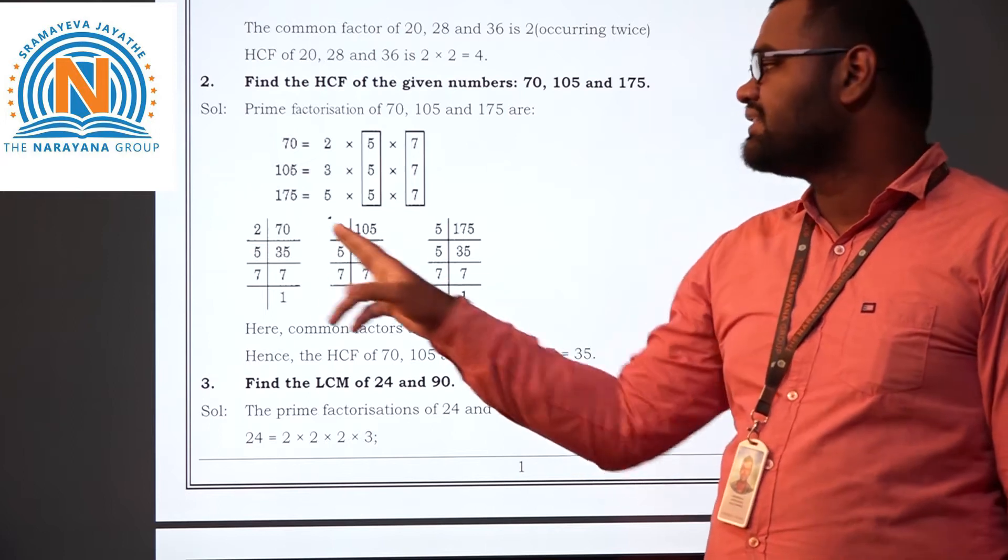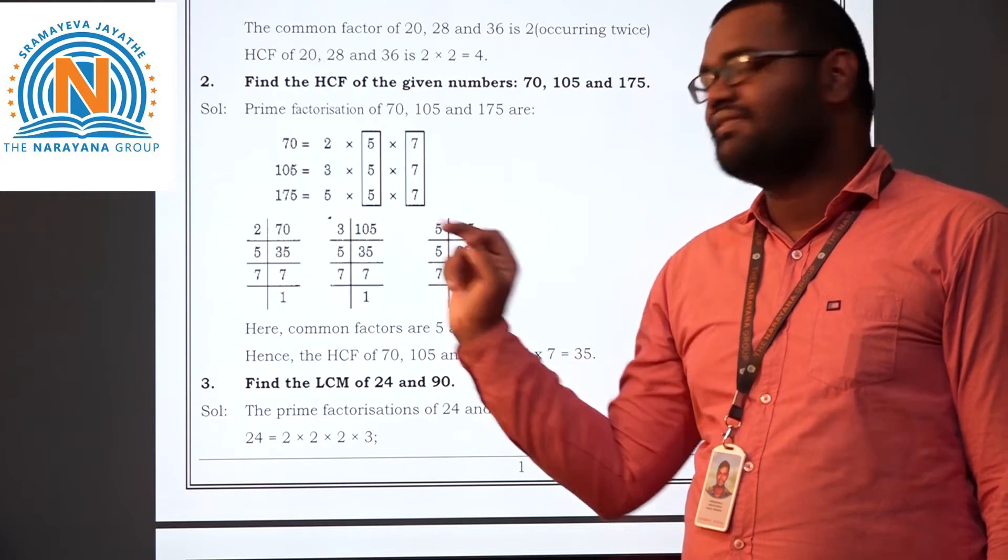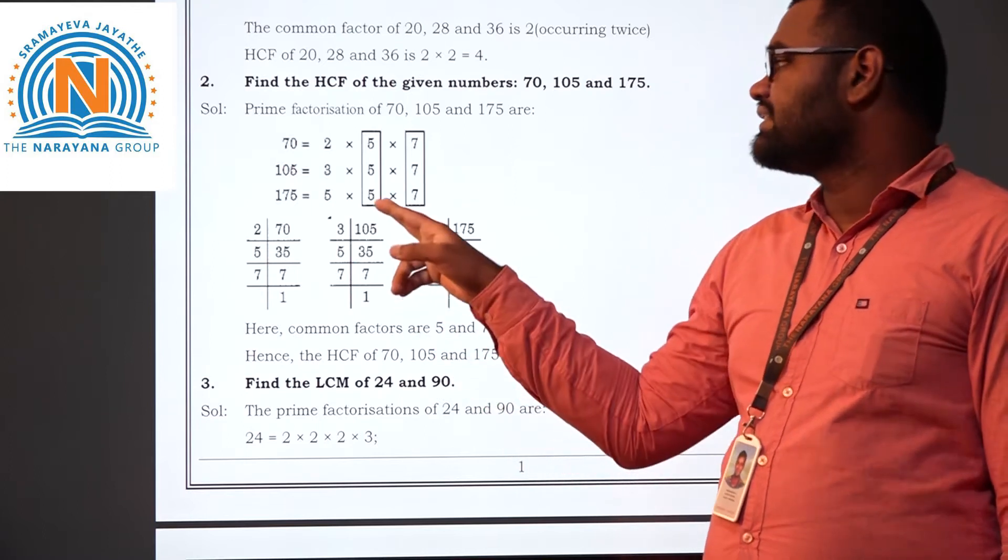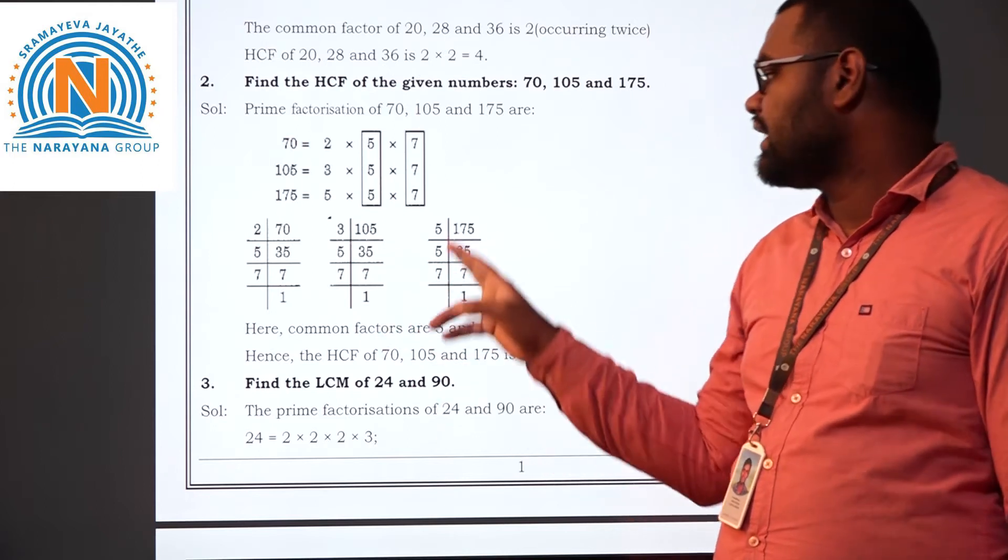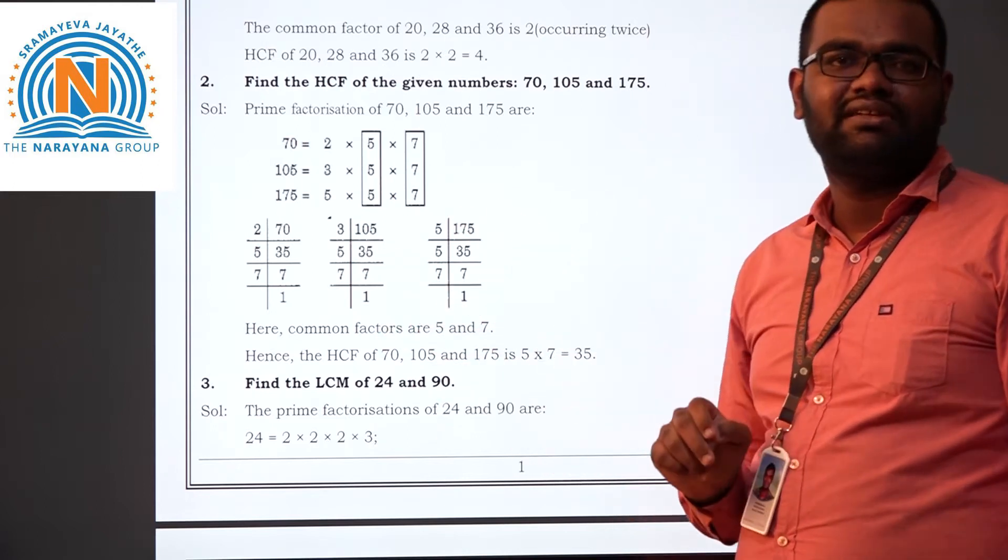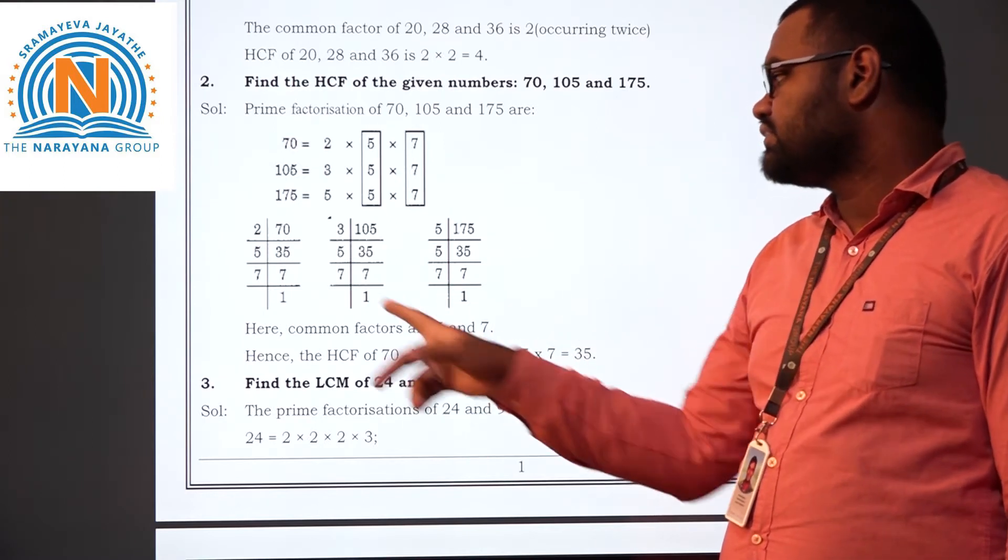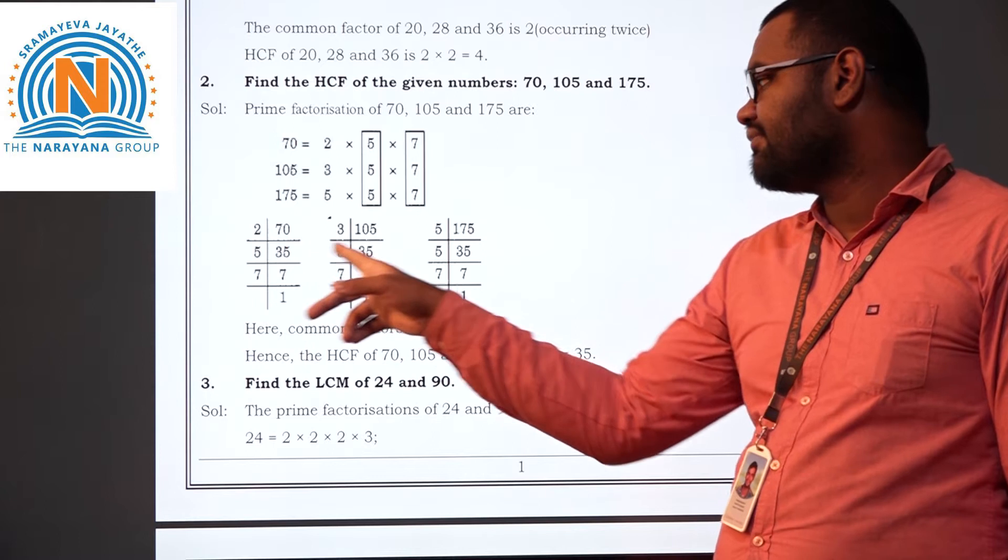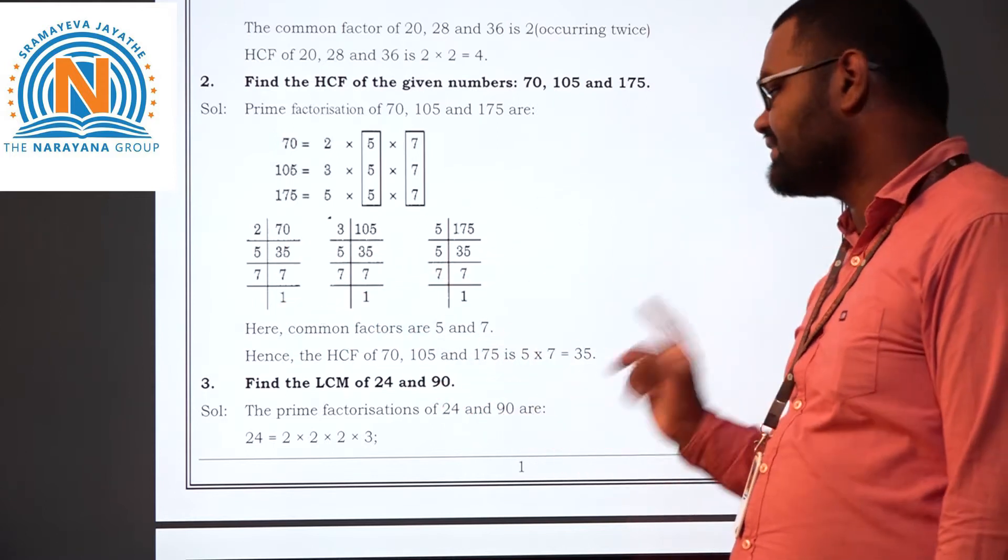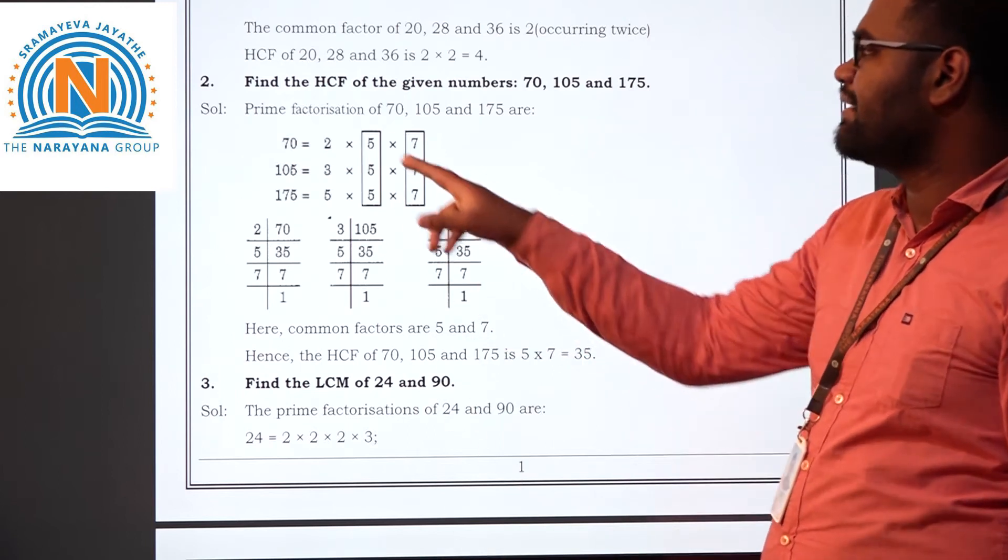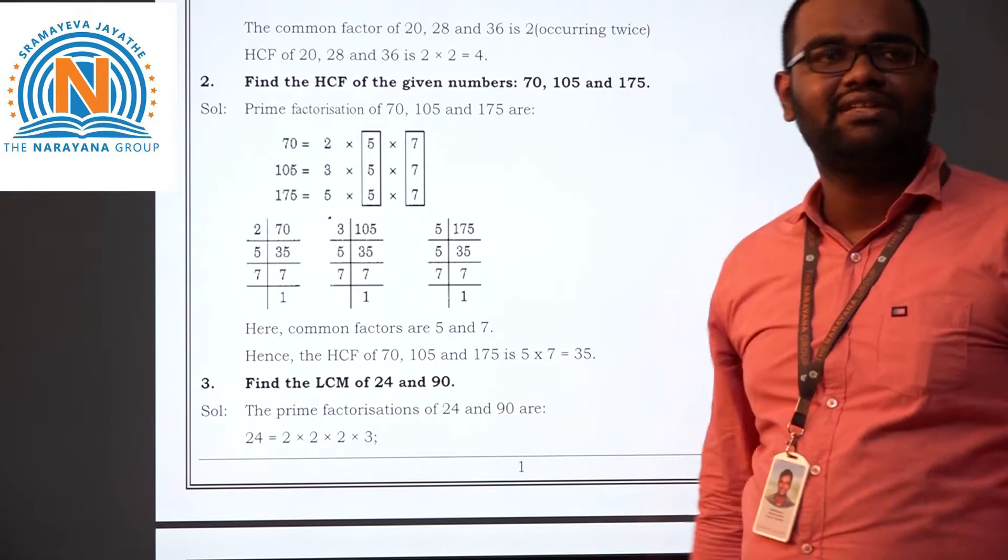Second also same model. 70 to 2 table it will go. 2 times 35 is 70. Next 5 times 7 is 35. That's all. Next 3 table. Do not 5. 2 table it will not go. 3 table, 3 times 35 is... 5 times 7 is. Again here 5 table only it will go, 175. 2, 3 do not go, directly 5 table. 5 times 35 is, 5 times 7 is. So if you see what is the common here, 5 is common and 7 is common. So HCF is 5 times 7 is 35. Clear students. Same as this you can write and you can take the common factors 5 and 7. So HCF is 35.